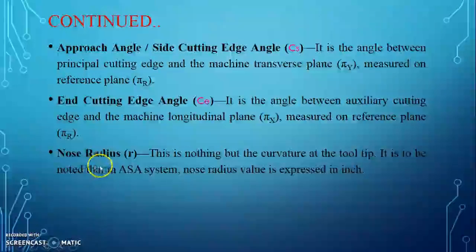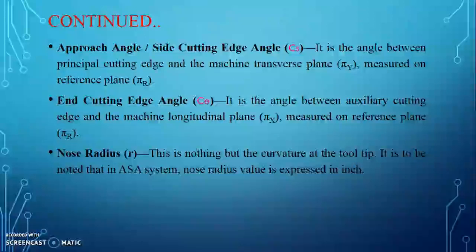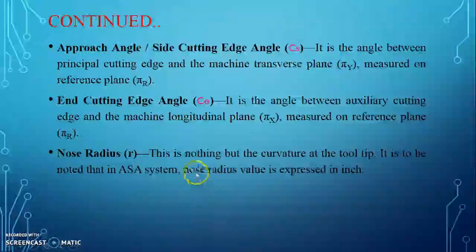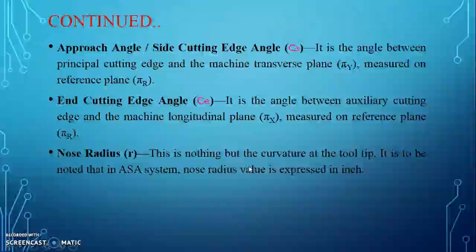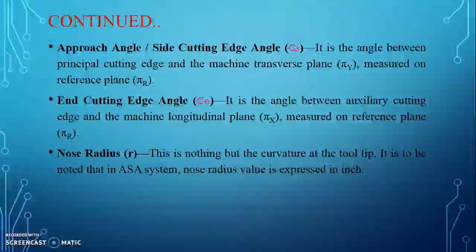The nose radius is located between the two cutting edges — the side cutting edge and the end cutting edge — and represents the curvature at the tool tip. It is noted that in the ASC system, the nose radius value is expressed in inches.